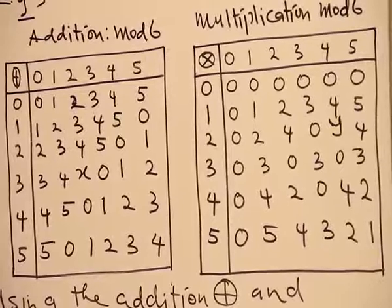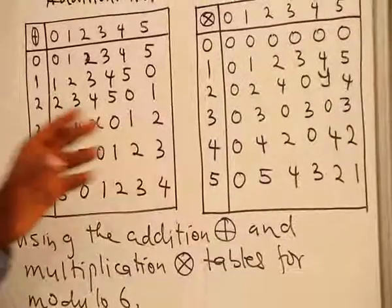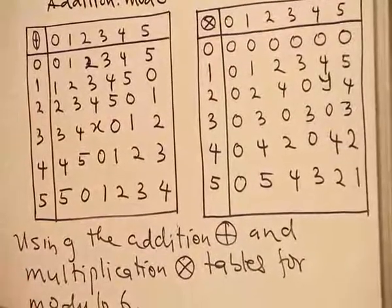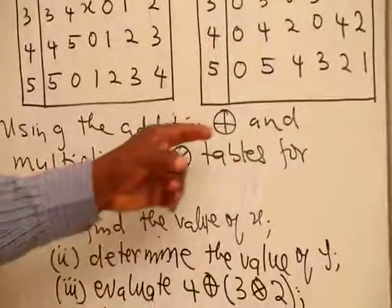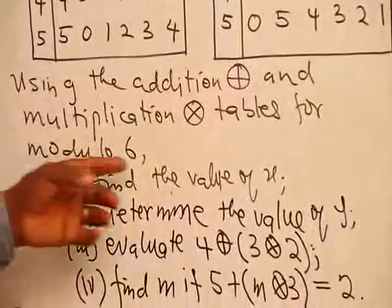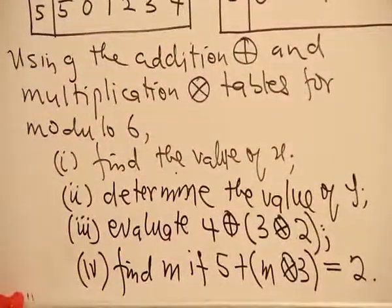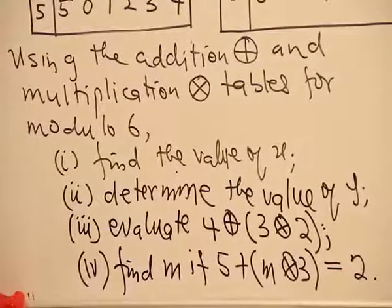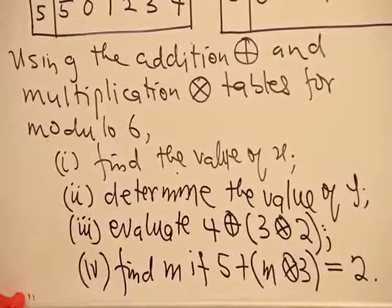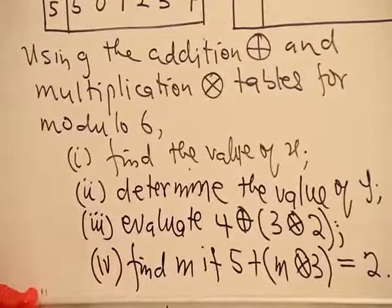Let us now attempt to solve this problem. We are going to use these tables to solve the problems below. Using the addition and multiplication tables for modulus 6: find the value of S, determine the value of Y, evaluate 4 plus 3 times 2 in brackets, and find M if 5 plus M times 3 in brackets is equal to 2.